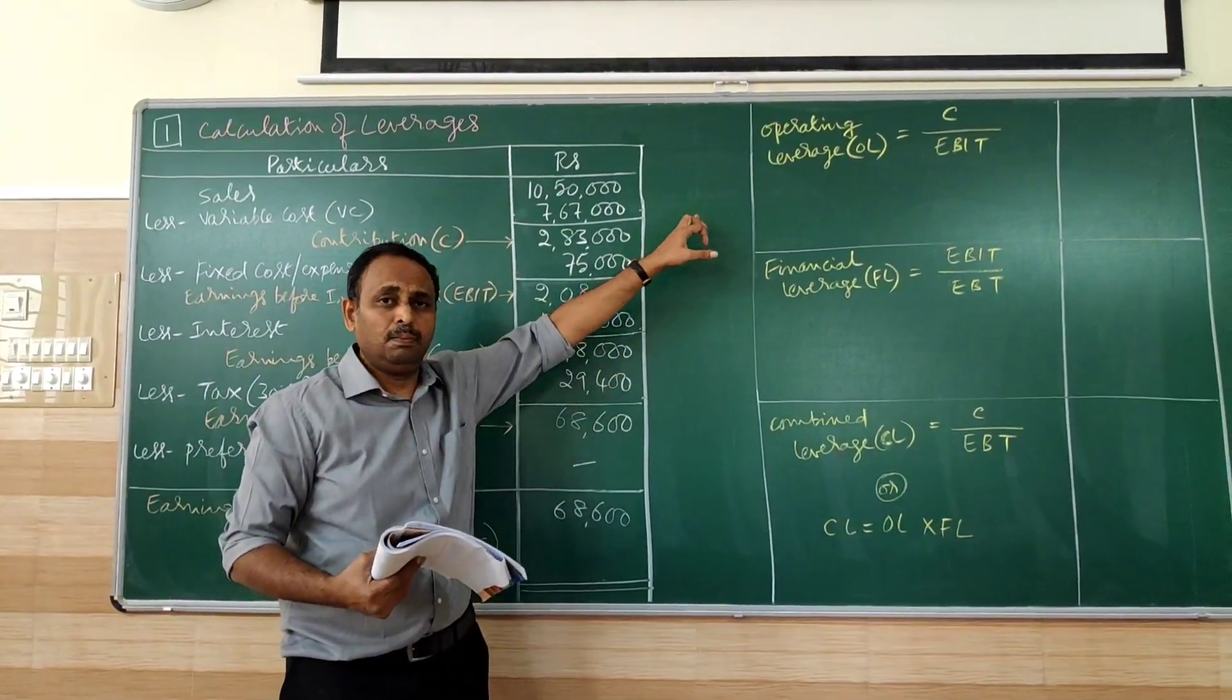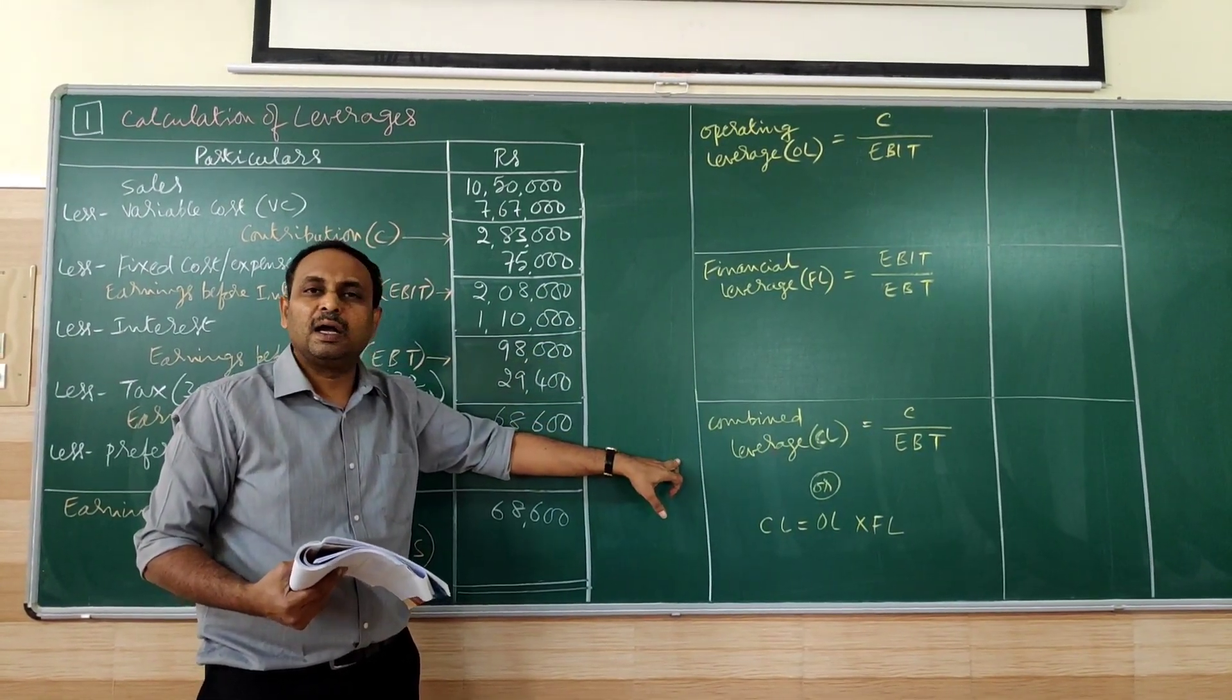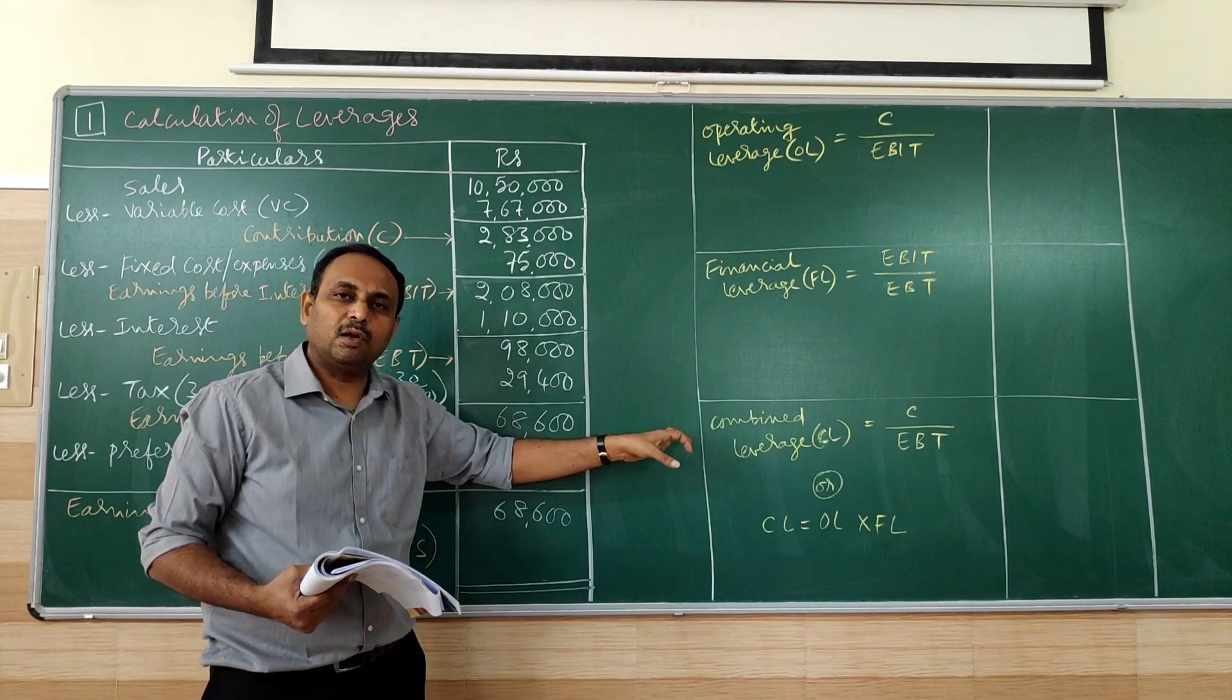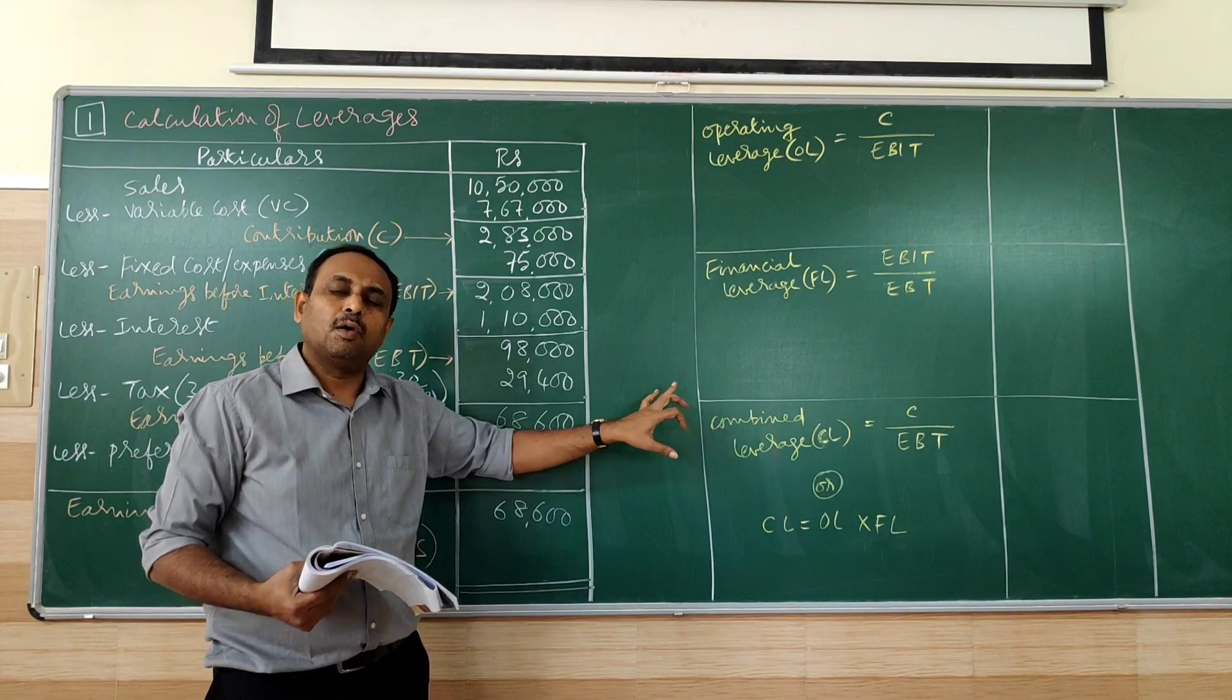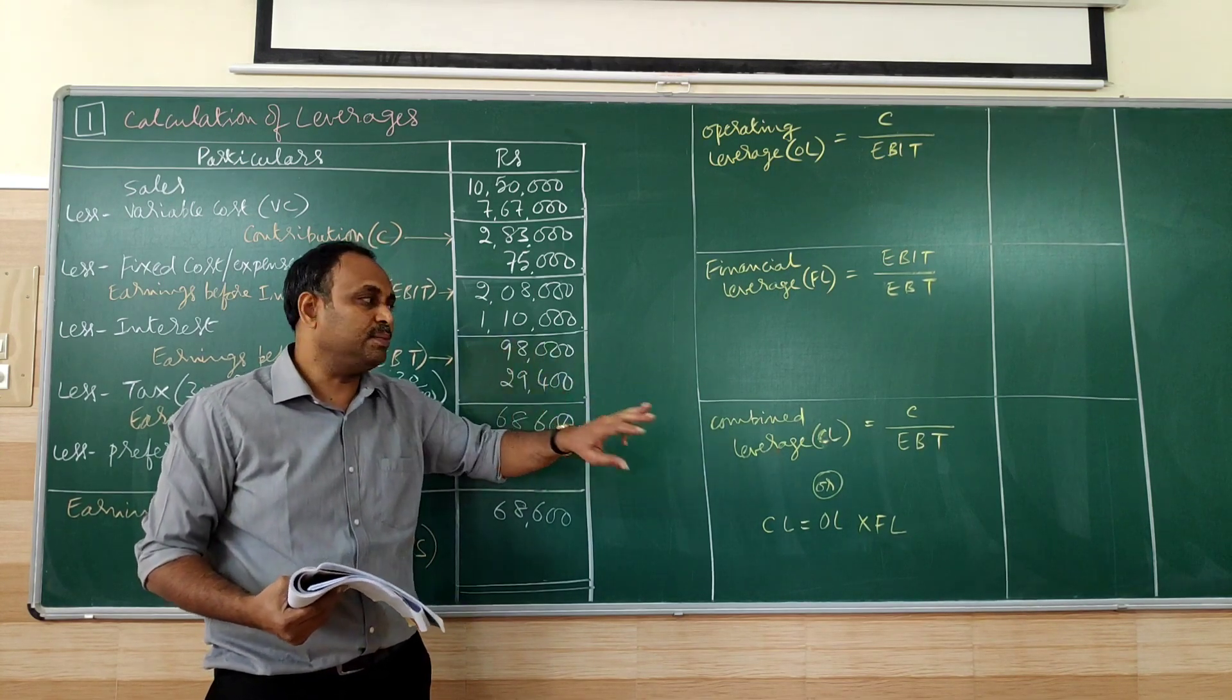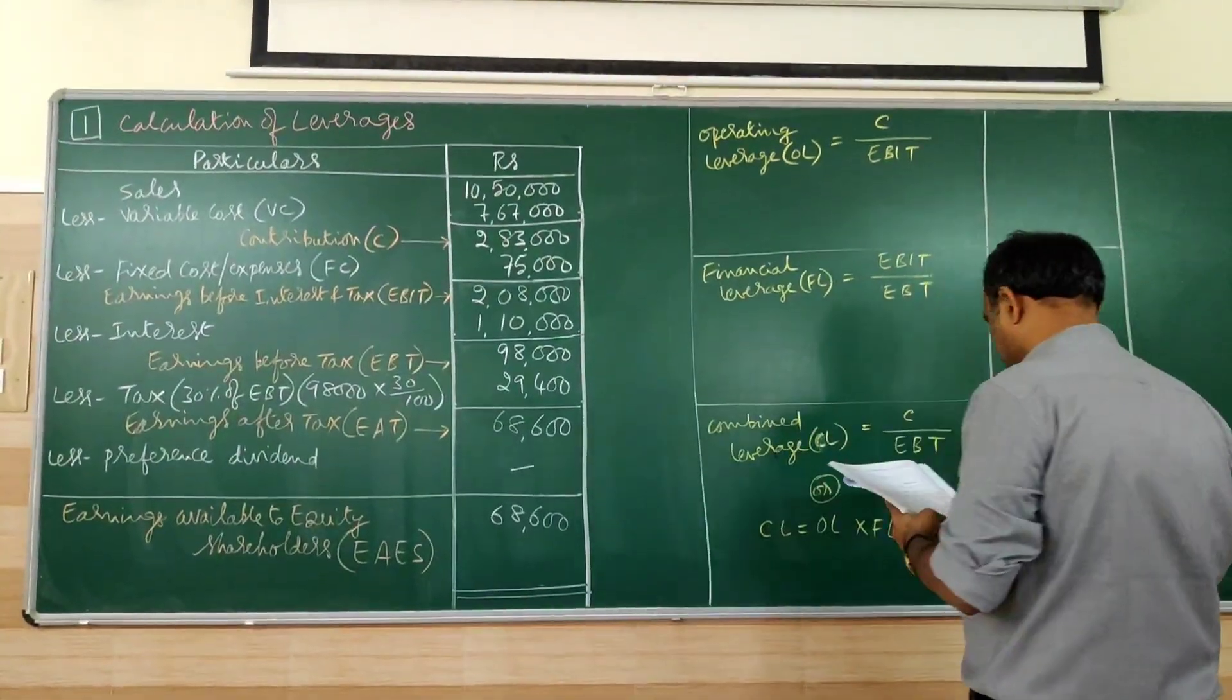There are three leverages: operating leverage, financial leverage, and combined leverage. Or we can call it as composite leverage or we can also call it as total leverage. So there are three names for combined leverage: combined, composite, as well as total leverage.